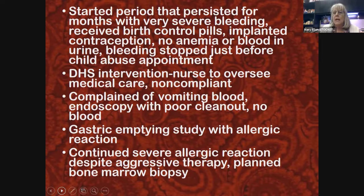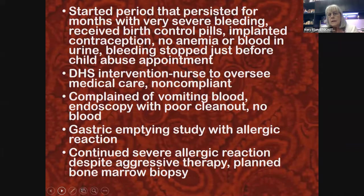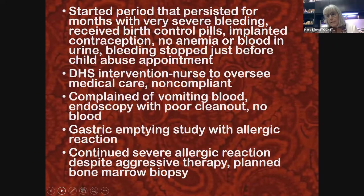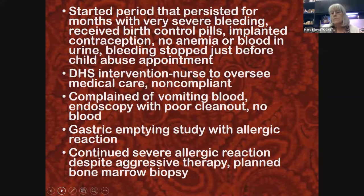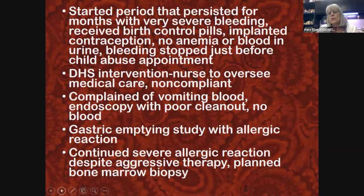As time went on, the severity of bleeding described got worse and worse. At one point the guardian said she bled so much she couldn't sit on the exam table without something underneath. However, she never had any anemia, and when she urinated into a cup in the emergency department there was no blood — both of which you would definitely expect. Because of that, we concluded she was a victim of Munchausen by proxy.